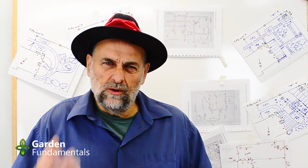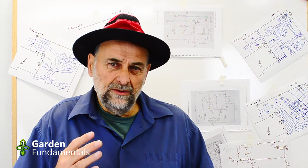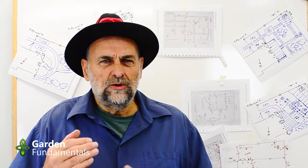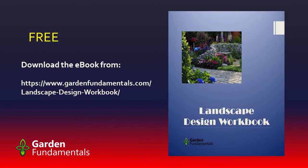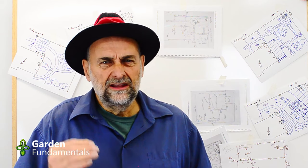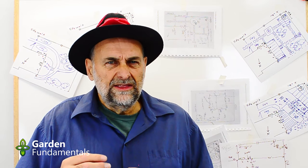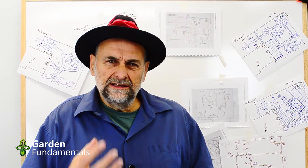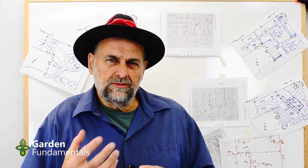Before we can design, we have to know what our wants and needs are, and we have to prioritize those. To help you along, I've made some questionnaires and put them in the landscape design workbook. If you haven't downloaded that, do that now — it's free and easy to get. It has two lists: one establishes your needs, and the other covers your wants. These are just guides — come up with your own questions and answers. All the lists do is help you think through the process.